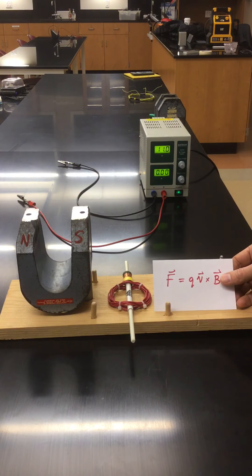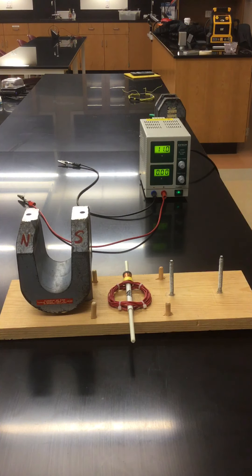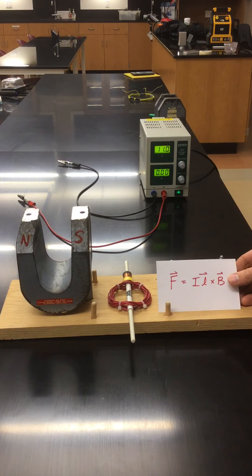In the previous video we referenced the familiar formula for how a magnetic field exerts force on moving charge and showed with the jumping loop that magnetic fields also exert force on currents that flow through a magnetic field.